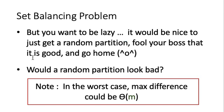The situation is that you want to be lazy. It would be really nice if we can just get a random partition, so that we don't need to think — just get a random partition of the students and fool your boss that your partition is already good enough. Your concern is whether the random partition would look bad. In the worst case, the maximum difference could be of order Θ(M). For instance, if half the students can swim and you put all swimmers in one group, the difference would be roughly half the number of students — that's really bad.